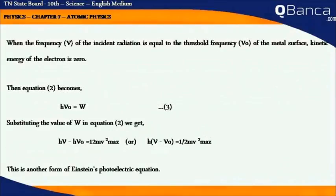When the frequency ν of the incident radiation equals the threshold frequency ν₀ of the metal surface, the kinetic energy of the electron is zero. The equation then becomes hν₀ = W. Substituting this value of W,